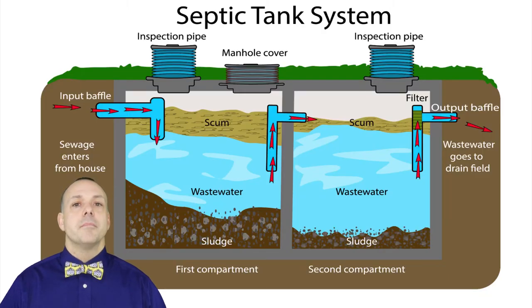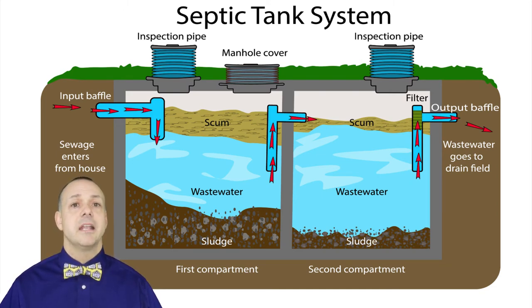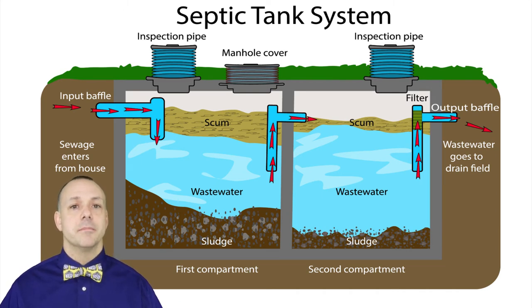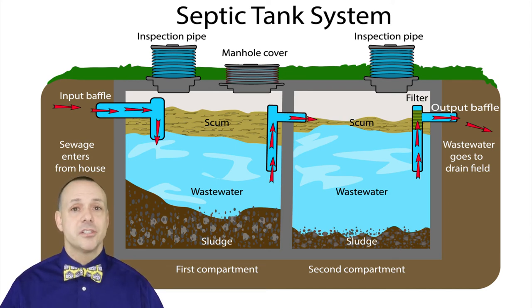Now let's talk about the advantages and disadvantages of the septic system. There's a septic tank and a leach field that contain the waste. The waste is sent into the system, the solids are filtered, and the rest of the waste is stored and treated right there on site on the property.